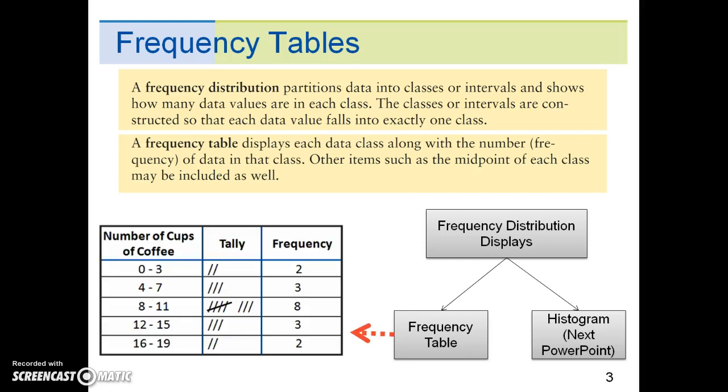Here is an example of a frequency table. The variable in this study is the number of cups of coffee people drink each week. The frequency identifies the quantity of people that belong to each class.